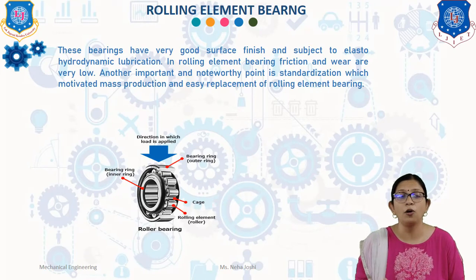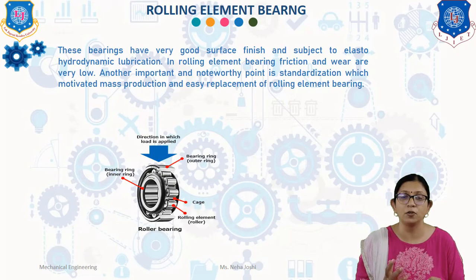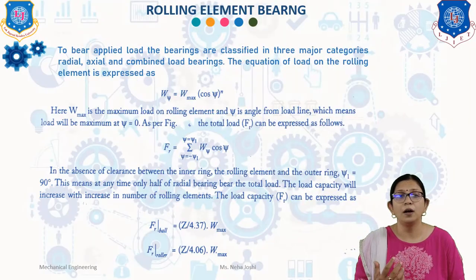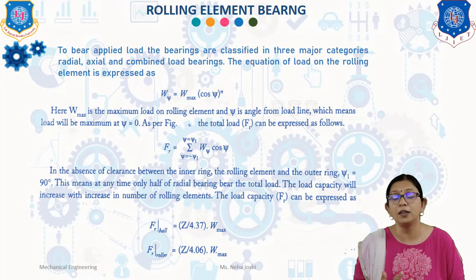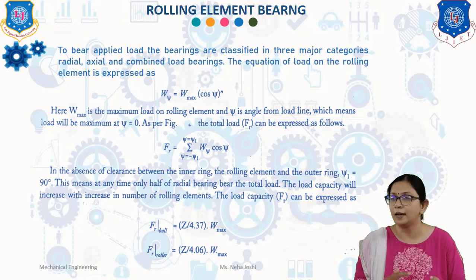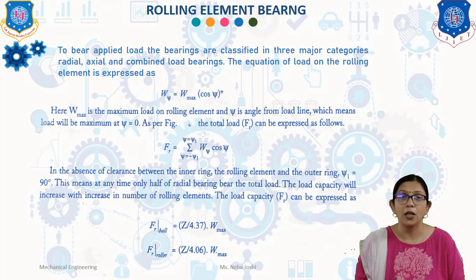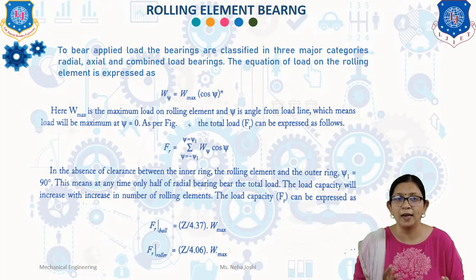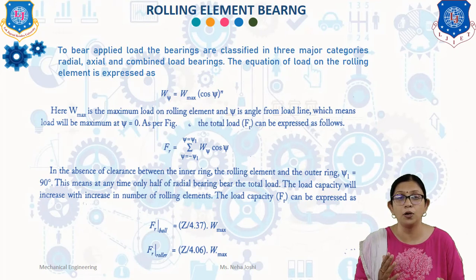The corners are always rounded to avoid concentration of stress in the corners. To bear the applied load on the bearing, loads are classified in three major categories: first one is radial, axial, and combined load of radial and axial. The equation of load on a rolling element is expressed as W(ψ) = W_max · cos(ψ)^n.